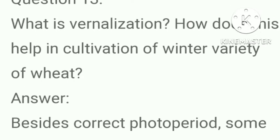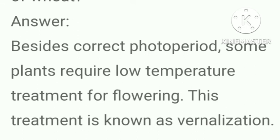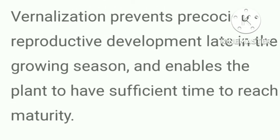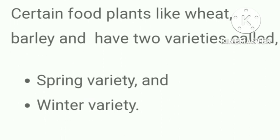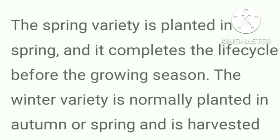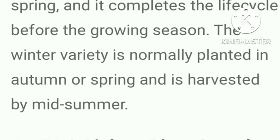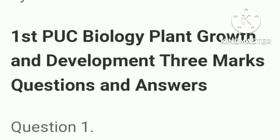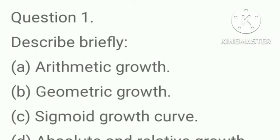What is vernalization and how does it help in cultivation of winter variety of wheat? Answer: Some plants require low temperature treatment for flowering; this treatment is known as vernalization. Vernalization prevents precocious reproductive development late in the growing season and enables the plant to have sufficient time to reach maturity. Certain food plants like wheat, barley and rye have two varieties called spring variety and winter variety. The spring variety is planted in spring and completes the life cycle before the growing season. The winter variety is normally planted in autumn and is harvested by midsummer.